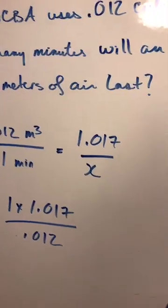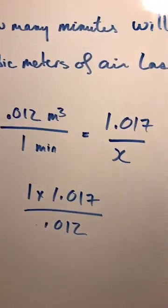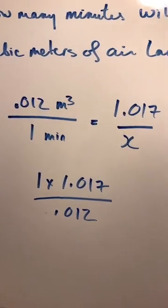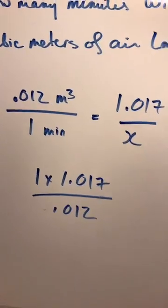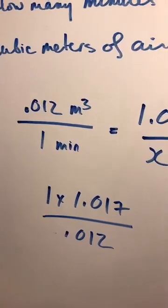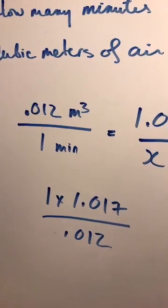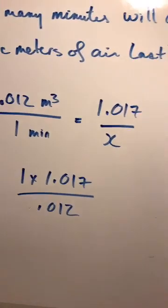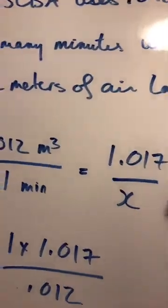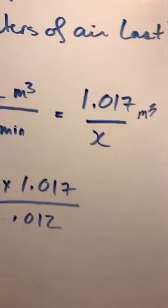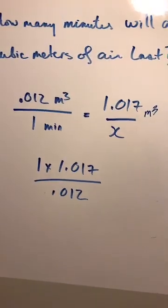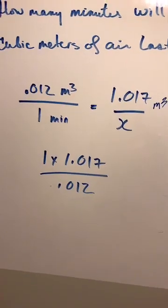Now she was brilliant and she knew that it was a rate and proportion question and so knowing that she plugged in her numbers which ended up being 0.012 cubic meters over one minute equals 1.017 cubic meters over X and then you're going to remember to cross multiply and divide by the remaining.